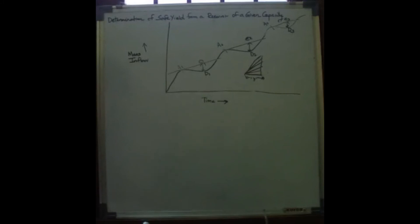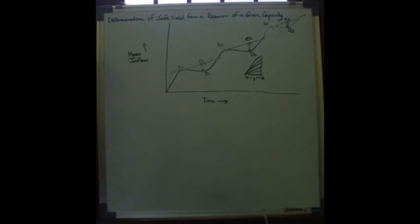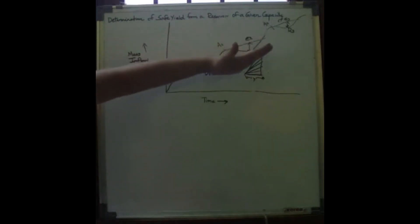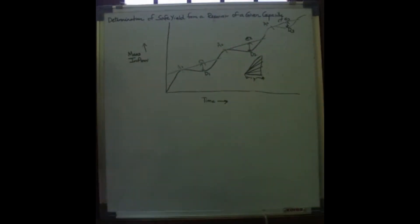The slope of the flattest demand line is the firm yield, or safe yield. The flattest slope among all the tangents drawn indicates the firm safe yield of the reservoir.